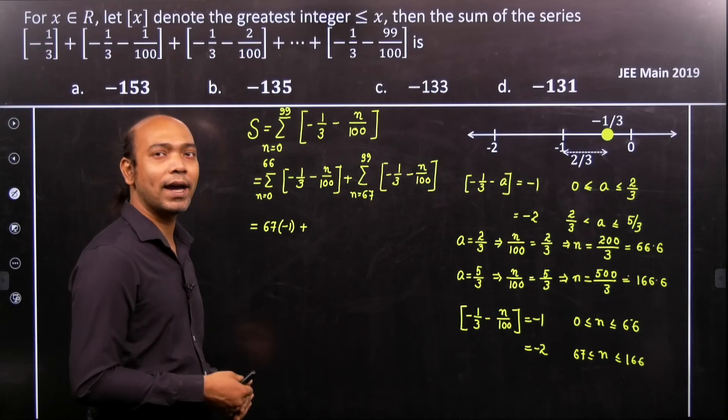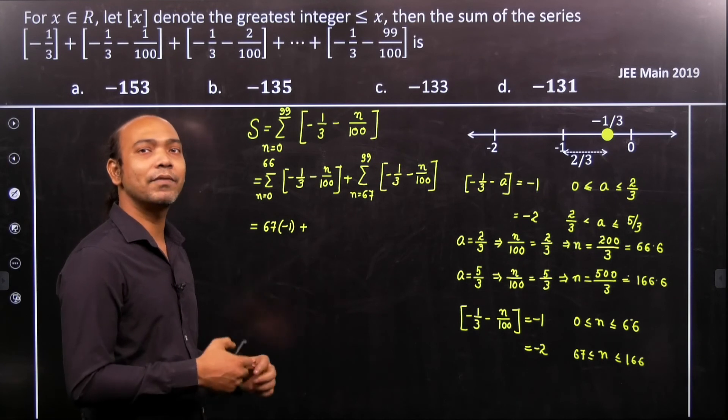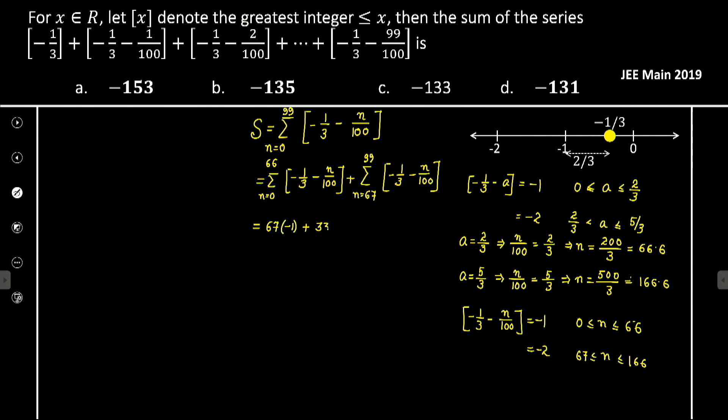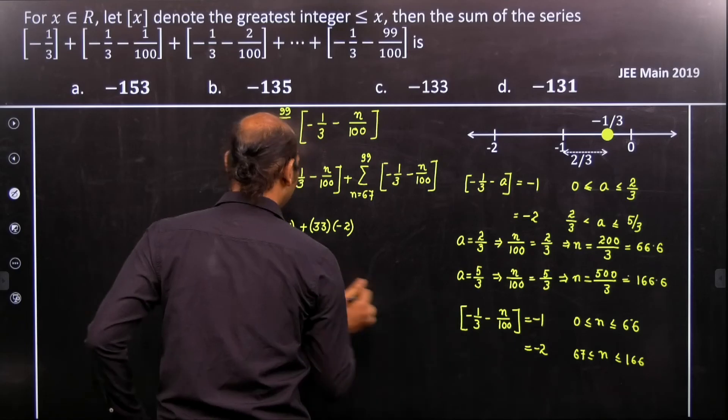In that case we have 99 minus 67, that is 32 plus 1, that is 33. Therefore we have 33 terms multiplied by minus 2 because these values get minus 2.